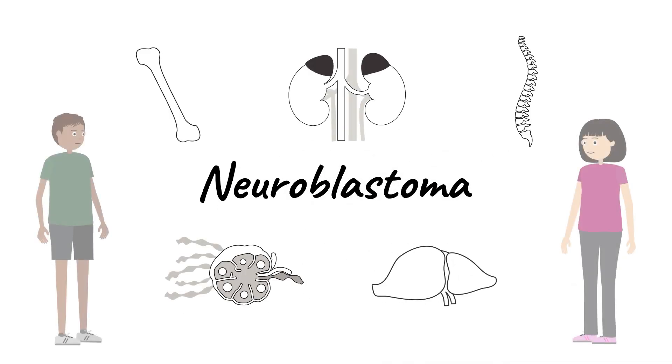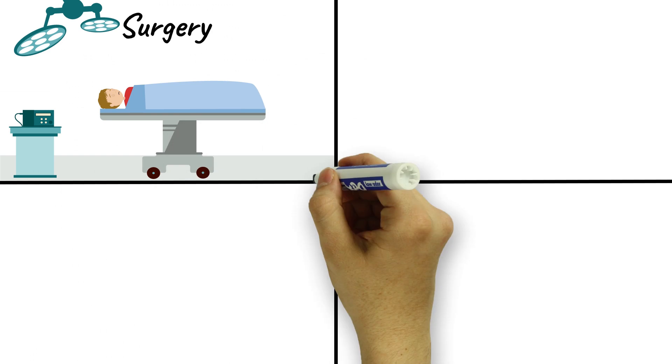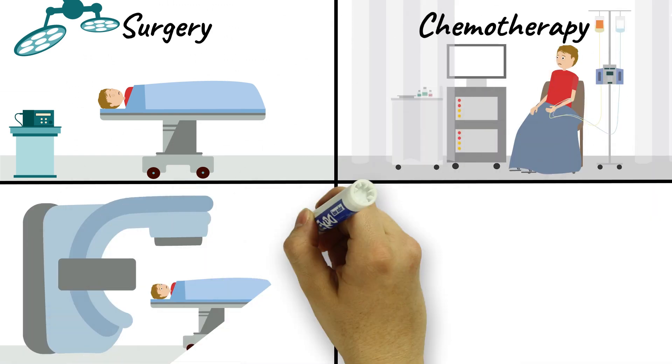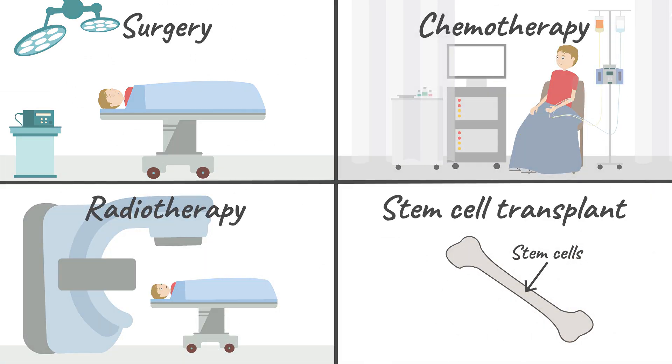Neuroblastoma is a type of cancer that affects young children. Current therapies include surgery, chemotherapy, radiotherapy, and stem cell transplants.